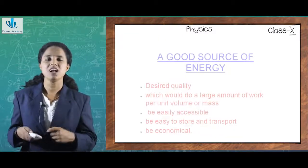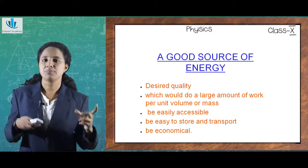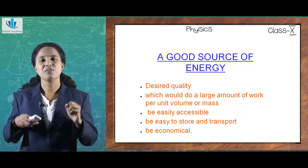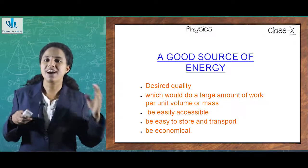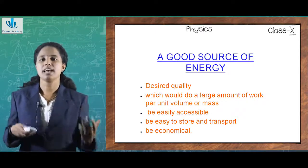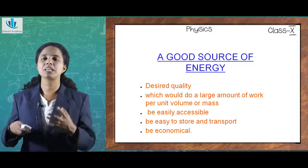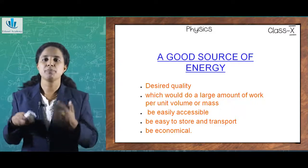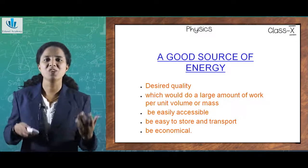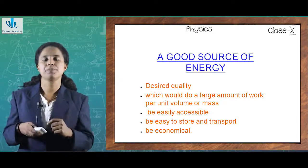We need to define what is a good source of energy. A good source of energy should be of desired quality. It should be able to do a large amount of work per unit volume or mass. For example, if I consider a fuel for running a vehicle, I would expect that for a certain number of kilometres a certain amount of petrol or diesel is enough. A good source of energy should give a desired amount of work per unit volume or mass.